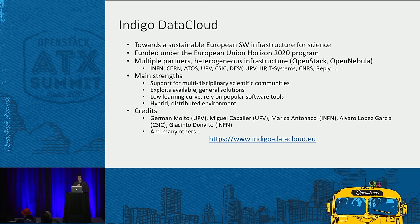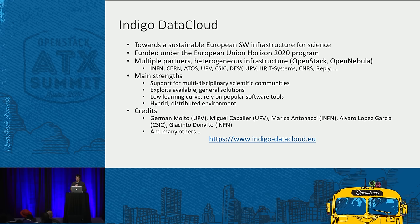There are many partners — INFN in Italy, CERN in Geneva, UPV in Valencia, DESY in Hamburg in Germany — both from research universities and from industry. Many of them are using OpenStack, but a few are also using OpenNebula, which we had to take into account when designing the system. The main goals are to support different scientific communities, build on available solutions, be quick to deploy, and support a distributed hybrid environment with both private and public clouds.